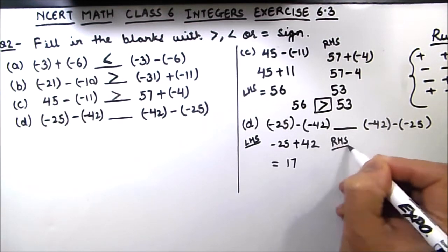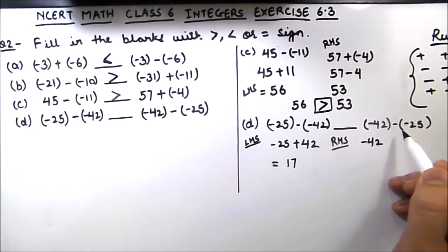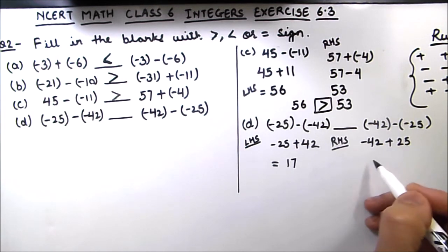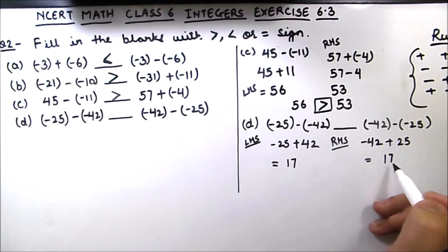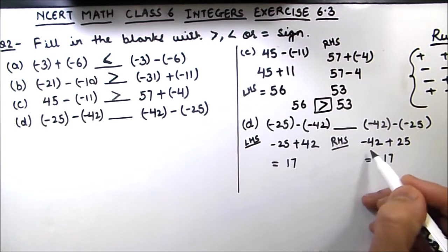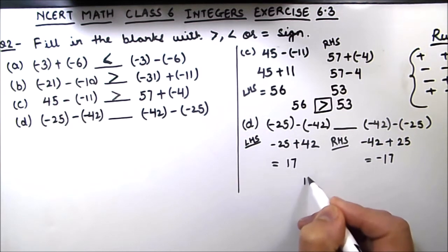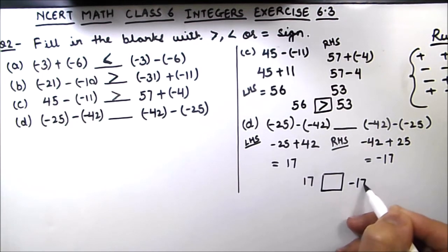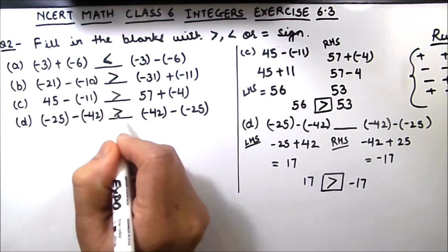For the right hand side: -42 we write as is. Minus and minus becomes plus, so we have -42 + 25. Negative and positive means we subtract: 42 minus 25 is 17. The sign is of the bigger number, which is 42, and 42's sign is negative, so the right hand side is -17. We have +17 on the left and -17 on the right, so we put the greater than symbol: 17 is greater than -17. In part D, the greater than symbol is used.